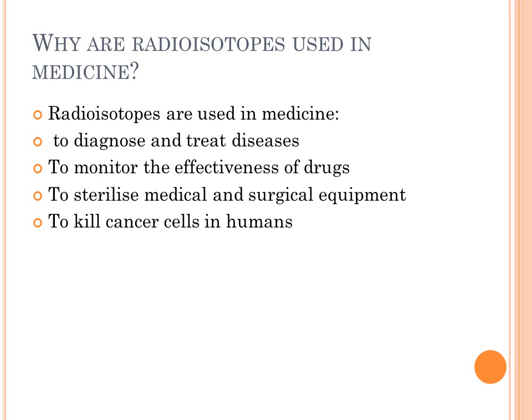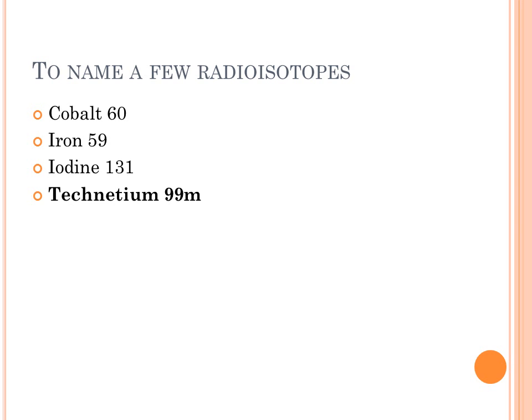Radioisotopes are used in medicine to diagnose and treat diseases, monitor the effectiveness of drugs, sterilize medical and surgical equipment, and to kill cancer cells found in humans. Radioisotopes used specifically in medicine include cobalt-60, iron-59, iodine-131, and technetium-99M.